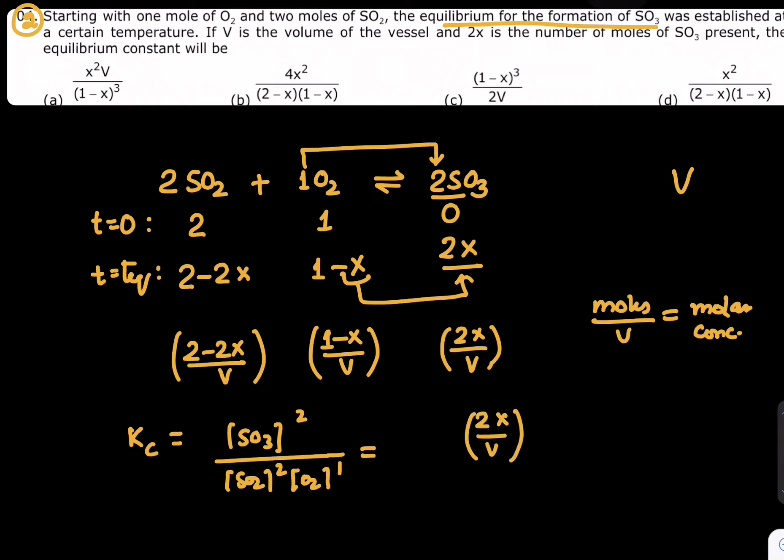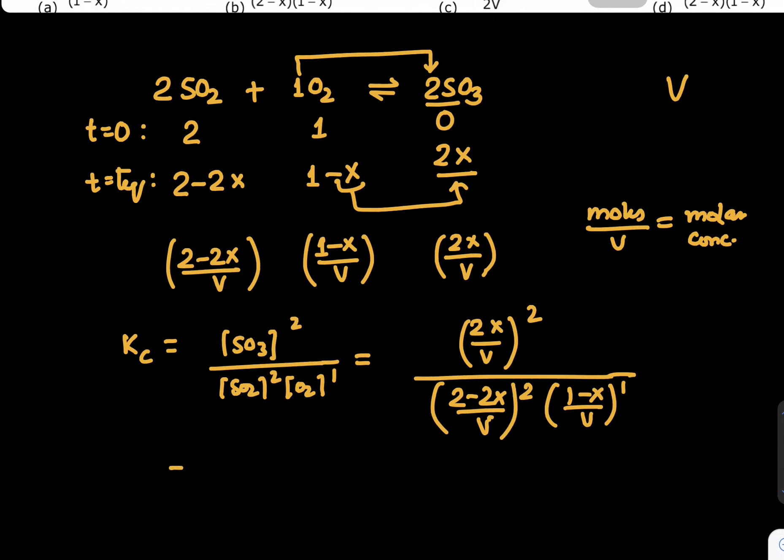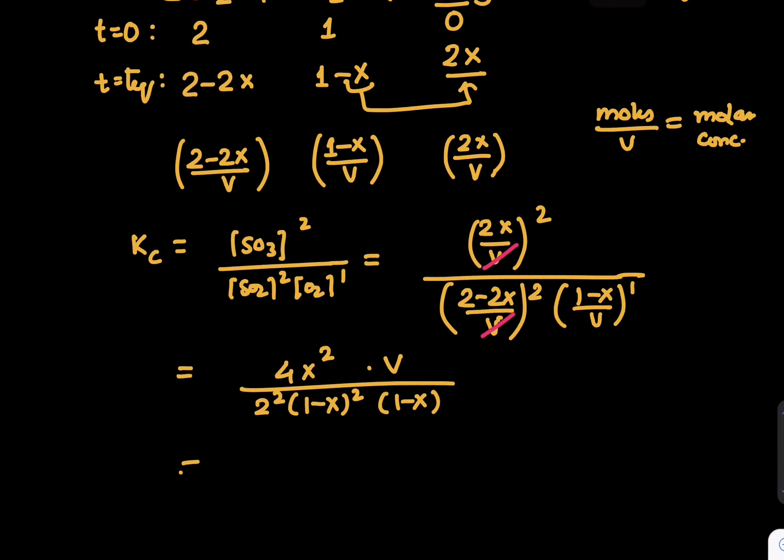If you put back the numbers, it would be (2x/V)² divided by (2 - 2x)/V squared times (1 - x)/V. Put all the values properly without any mistake in calculation. Remember, you have to avoid all kinds of calculation mistakes. Can we say V² and V² cancel? Now what will happen? 2x whole squared is 4x². If you write it clearly, this is 4x².